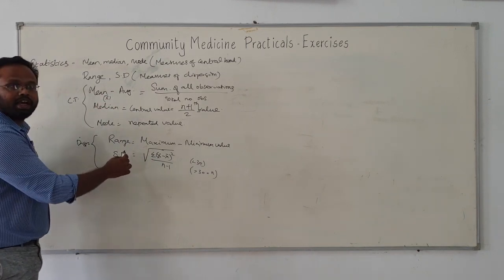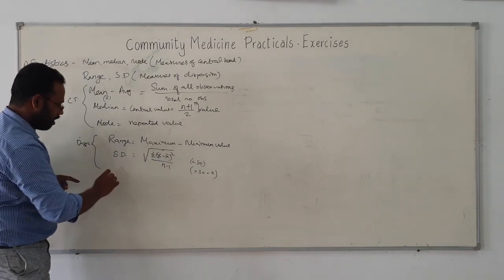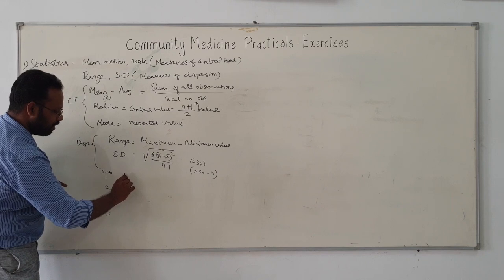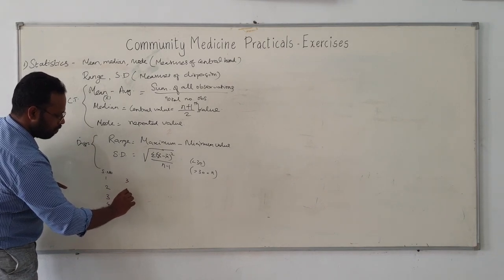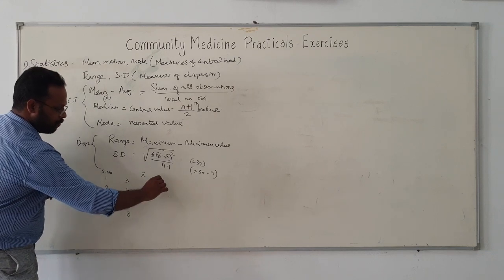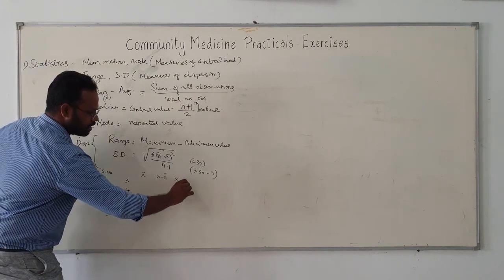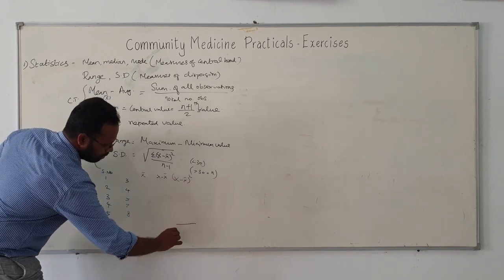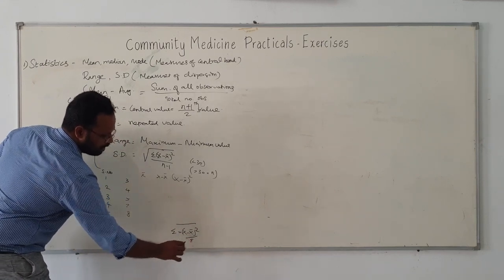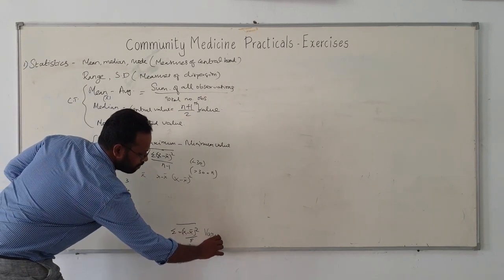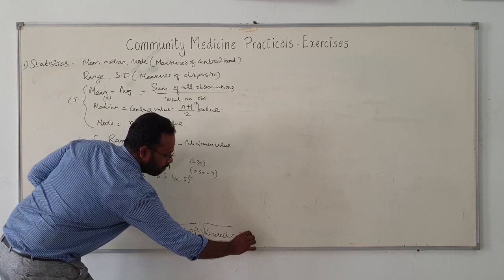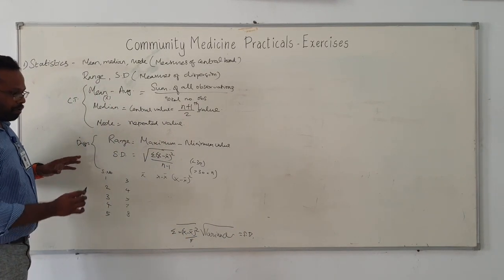Here, x̄ is your mean, otherwise called x-bar. For standard deviation, you put a table with a serial number column and the value column. Suppose we have values 3, 4, 5, 7, 8 — calculate the average (x̄), then calculate (x − x̄), then (x − x̄)², then sum it up to get Σ(x − x̄)². Divide by n to get the variance; the square root of variance gives the standard deviation.